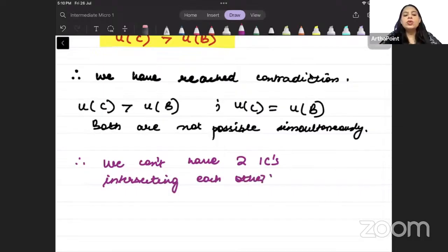Therefore, two indifference curves cannot intersect each other. Am I clear with this? So this is the only topic I wanted to discuss for today, that two indifference curves cannot intersect each other.